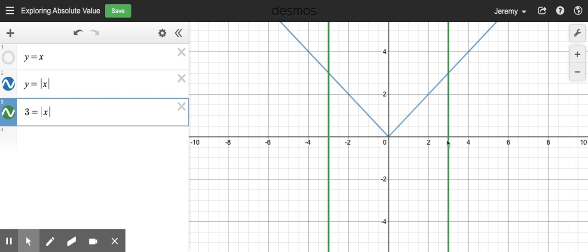It puts a vertical line right here at negative 3 and positive 3, because those are the two values of x where if you take the absolute value, you get 3.